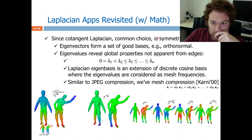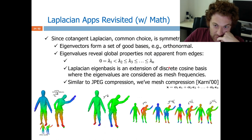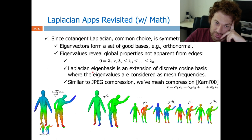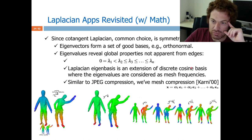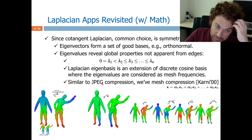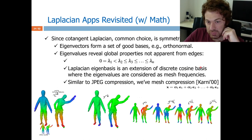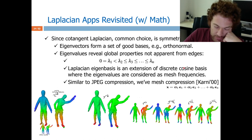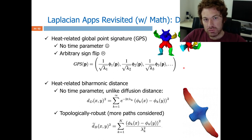Now let's use this orthonormality and this eigenbasis of the Laplacian. The eigenvectors are like my x, y, z Cartesian axes — they are orthonormal. This is an extension of the discrete cosine basis, another good basis used to define images. The JPEG compression is based on this cosine basis, where you get some coefficient from some bases. The same idea is applied to meshes: to compress the mesh and recover it back with those coefficients.